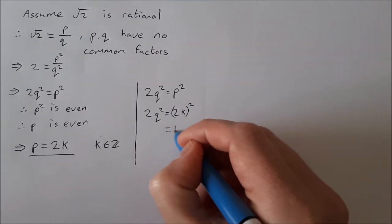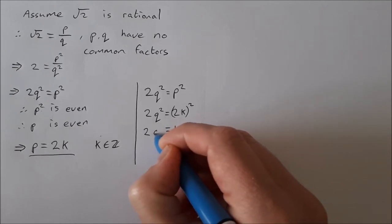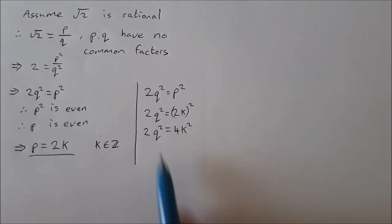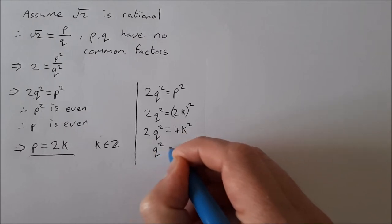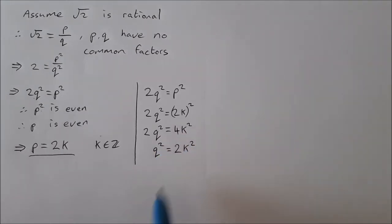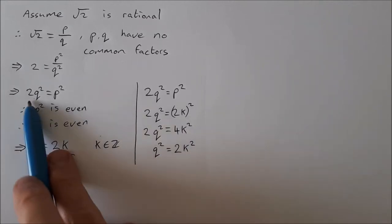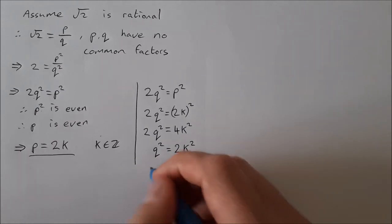2k squared is 4k squared, so that means 2q squared is equal to 4k squared. Divide across by 2, q squared is equal to 2k squared. Well this is similar to this. We've now just shown that q squared is even.